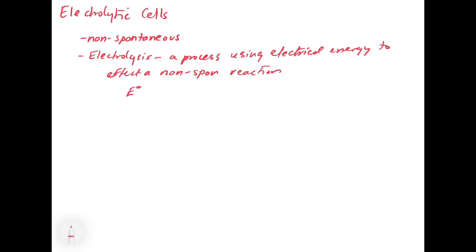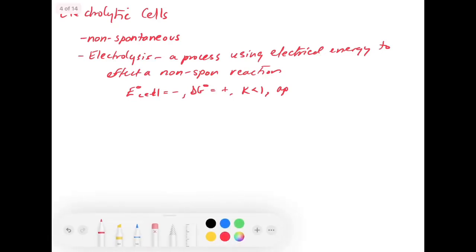These cells are going to have an E_cell that is negative. They're going to have a ΔG° that's positive. Their K is going to be less than 1, so they're going to favor the reactants instead of the products. Work has to be done on the system to make it go.